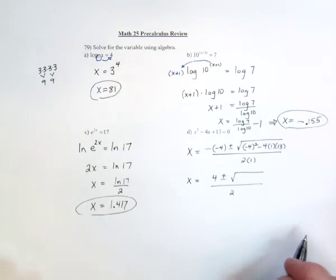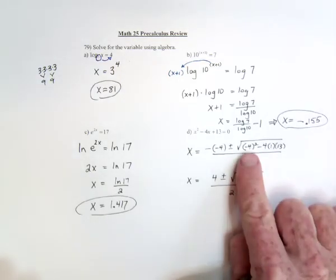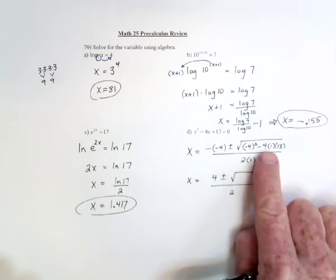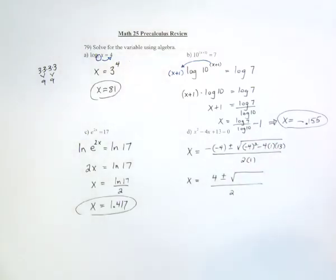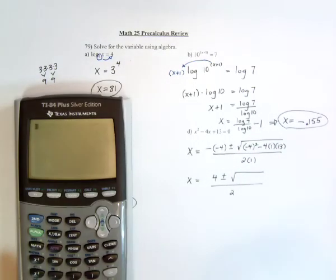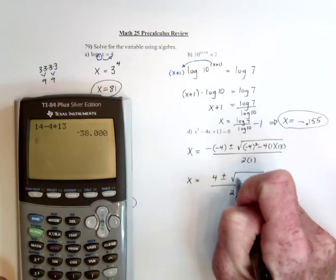This would be 16, that's going to be an imaginary number. So we've got 16 minus 4 times 13: negative 38.